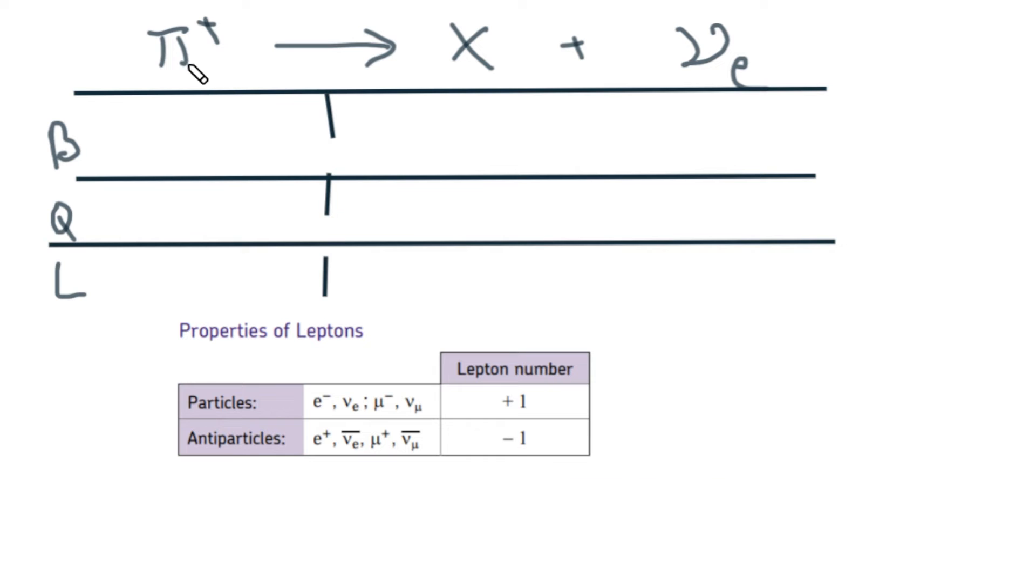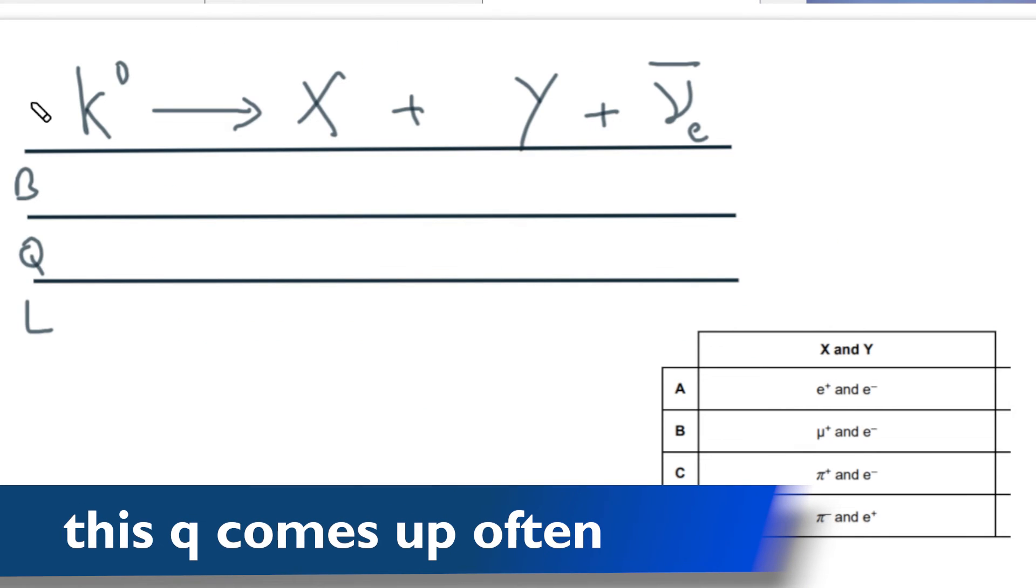In this second example we have a pi plus or pion which is decaying into something and an electron neutrino. The baryon number is zero for any meson and zero for neutrinos, so it must be zero for our mystery particle. The charge on the pi plus is plus one, the charge on the neutrino is zero, so the mystery particle must be plus one. A meson has a lepton number of zero and an electron neutrino has a plus one lepton number, so X must be minus one. It's not going to be another neutrino, and it'd be very unusual to get an electron neutrino with a muon. Therefore particle X must be a positron.